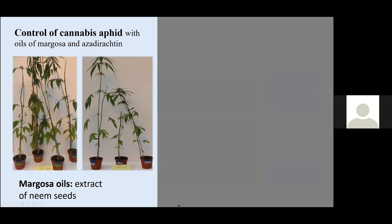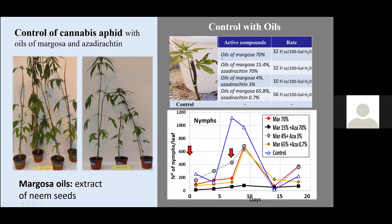I evaluated the effects of some registered insecticides on the cannabis aphid. We tested Margosa and Azadirachtin. Margosa oil is extracts of the neem seeds, whereas Azadirachtin is a secondary metabolite that's more complex for extraction. We have these compounds. This is the active compounds and the rates here. At 20 days, you see that the lowest numbers of aphids are on the product that has 70 percent of Azadirachtin.